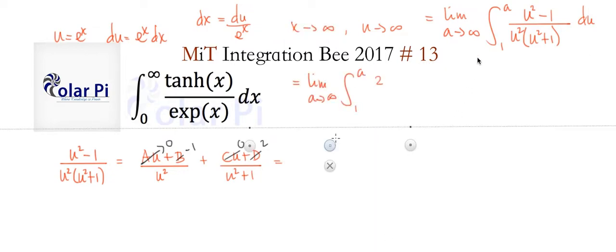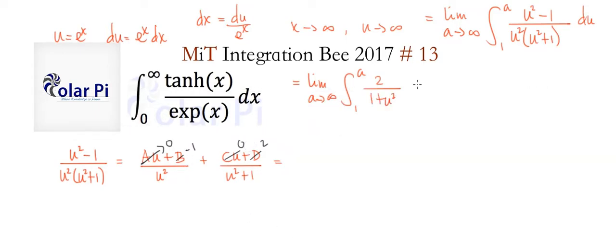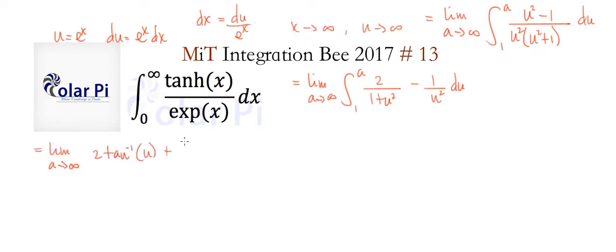Coming back to our integral, the partial fraction decomposition tells us the integrand equals 2 over (u^2 + 1) minus 1 over u^2. Writing u^2 + 1 as 1 + u^2 makes it easier to recognize: the antiderivative of 2/(1 + u^2) is 2·arctan(u), and the antiderivative of −1/u^2 = −u^(−2) is +1/u. We evaluate from one to a and send the limit as a goes to infinity.